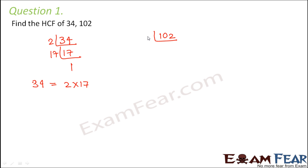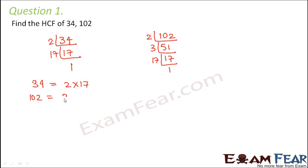Now let us do prime factorization of 102. So 102 can be written as 2 into 3 into 17.